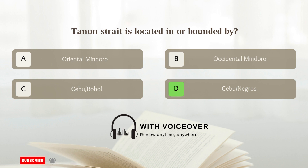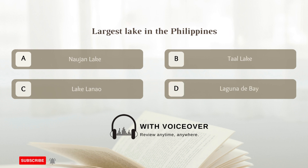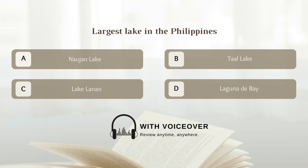Tannan Strait is located in or bounded by D. Cebu and Negros. Largest lake in the Philippines: A. Nauhan Lake; B. Taal Lake; C. Lake Lanao; D. Laguna de Bay.